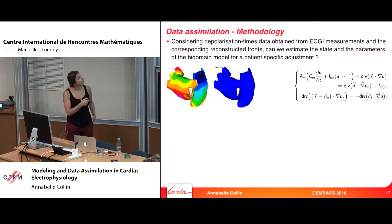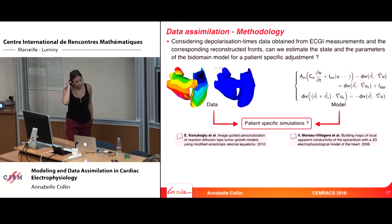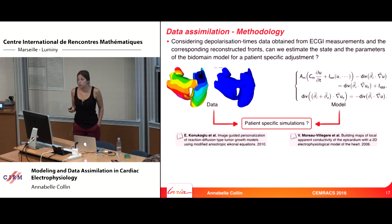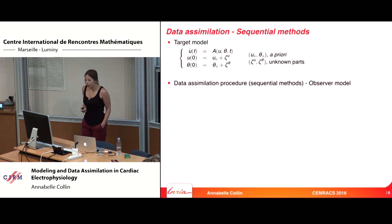So I have the depolarization map, giving me the position of the front over time. I also have my model — the bidomain model — and I want to provide patient-specific simulations. There is much work in the literature on this, but in many cases people simplify the bidomain model into a level set equation, where the solution U is naturally the same as the data. Our objective is instead to use a sequential estimation directly on the complete bidomain model.